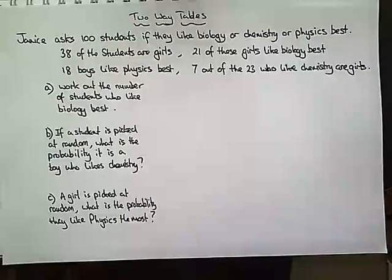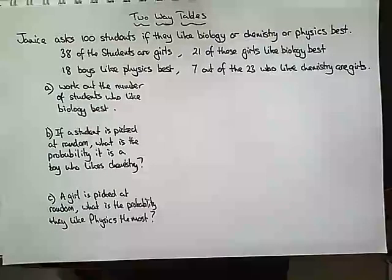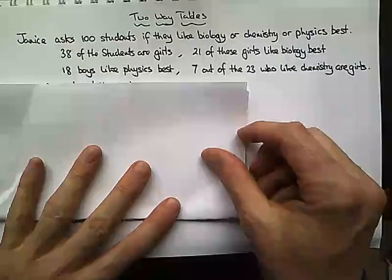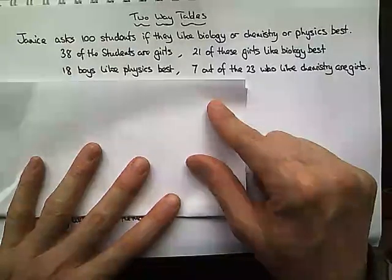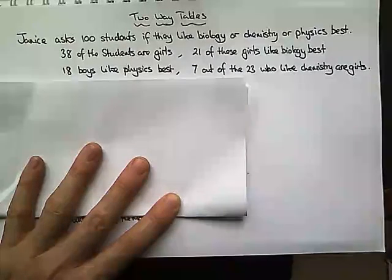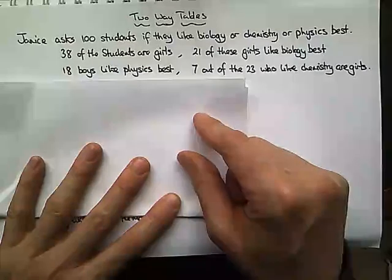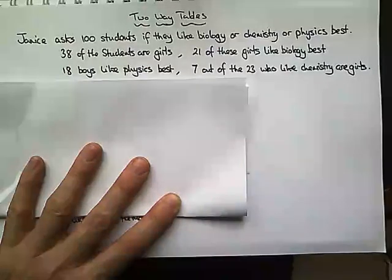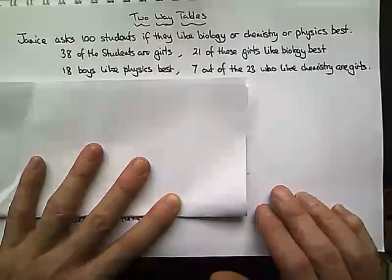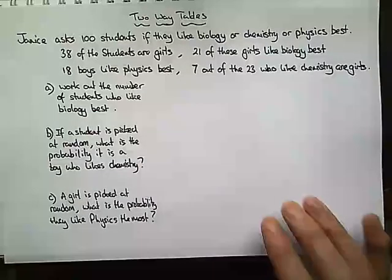So basically if we were given a problem, it would be so much easier if we were to draw it up in a table strategically, rather than have lots of random numbers all over the place trying to work out who does what and who prefers what. If we draw up a table it will make our lives a lot easier. So let's have a look at the question and the information they're giving us.